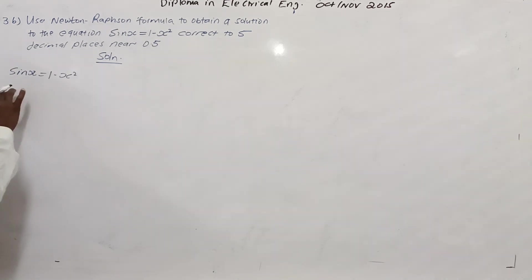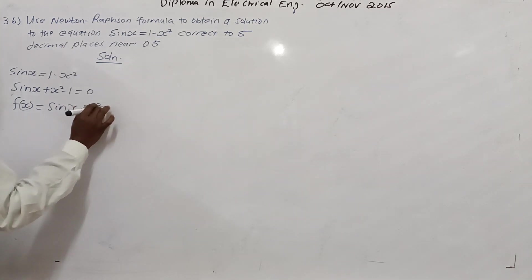Then we have sin x equals 1 minus x squared, which you can write as sin x plus x squared minus 1 equals 0. Of course, now this will become a function of x. You can see function of x equals sin x plus x squared minus 1.